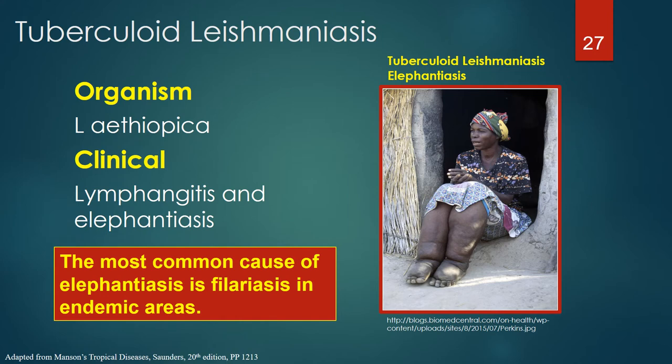There is a tuberculoid form of leishmaniasis occasionally associated with Leishmania ethiopica infection, presenting with lymphangitis resulting in lymphatic obstruction and lymphedema called elephantiasis. The most common cause of elephantiasis is filariasis in endemic areas, yet leishmania should be considered as a potential cause in areas where Leishmania ethiopica is prevalent.